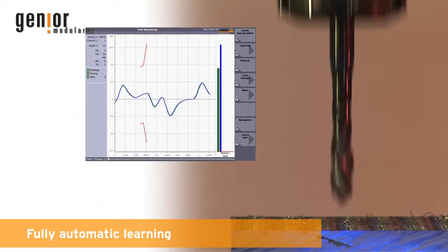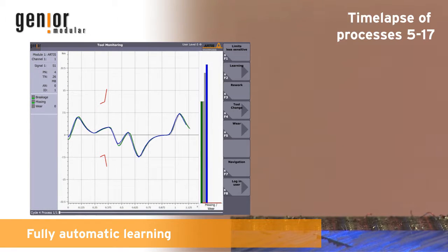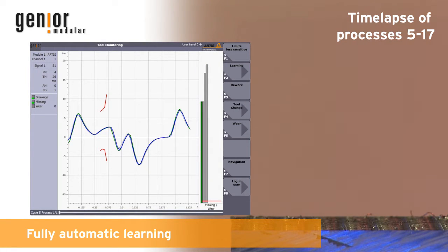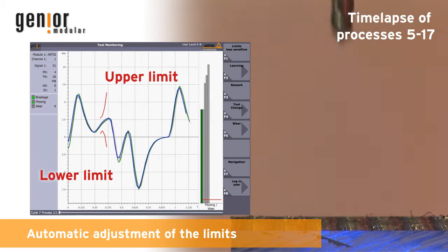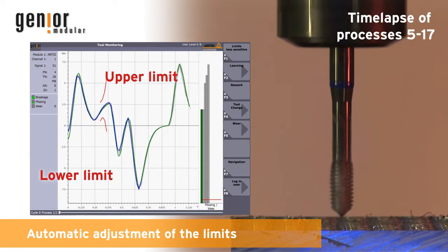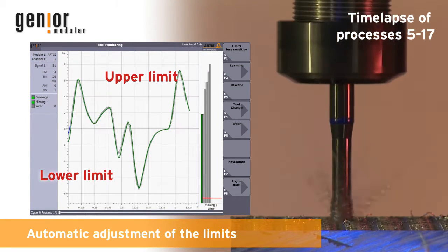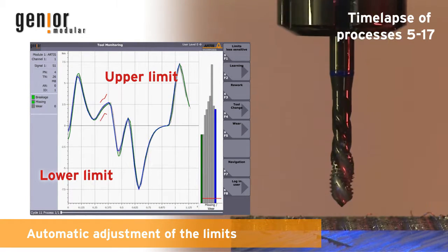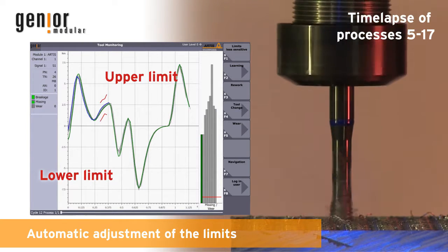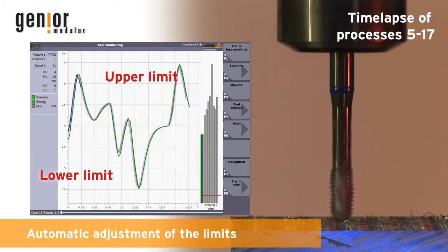Demonstration of the learning processes. The setting of the very first alarm limit is done automatically. During the following processes, these become more and more refined. After only a few processes, the monitoring is optimally adjusted and the system functions automatically without operator intervention. The last processes, displayed in grey, show process variations.